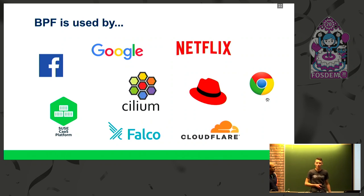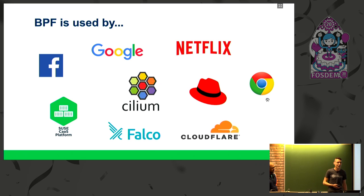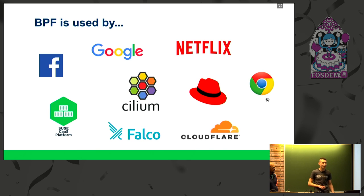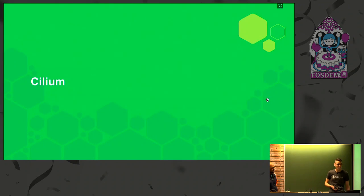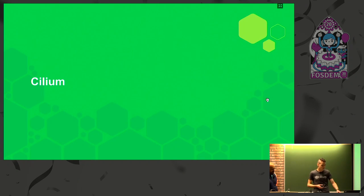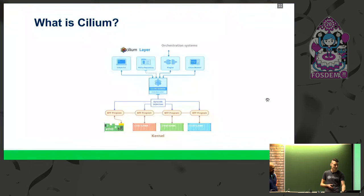These are companies using BPF: Google, Red Hat, Netflix, and SUSE. We are using it because in our distribution of Kubernetes — SUSE Container as a Service Platform — we are using Cilium as the CNI driver. So we've briefly explained what BPF is, and now we will talk more about Cilium itself and what features it has.